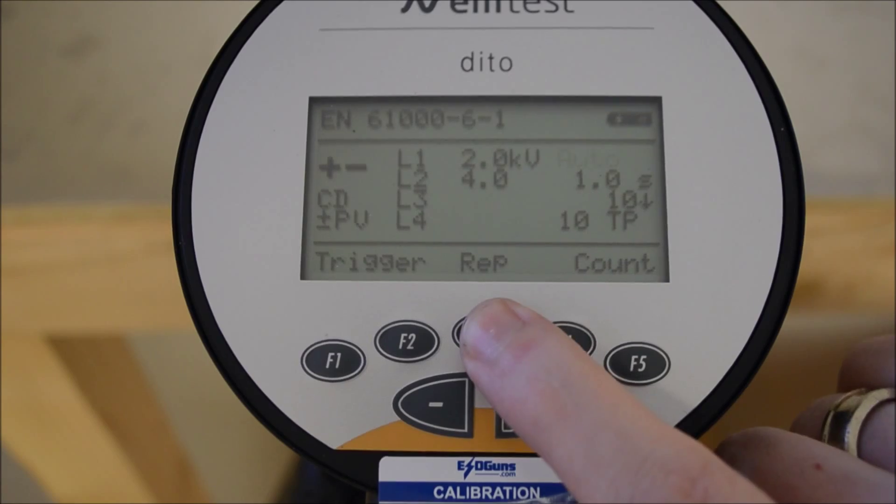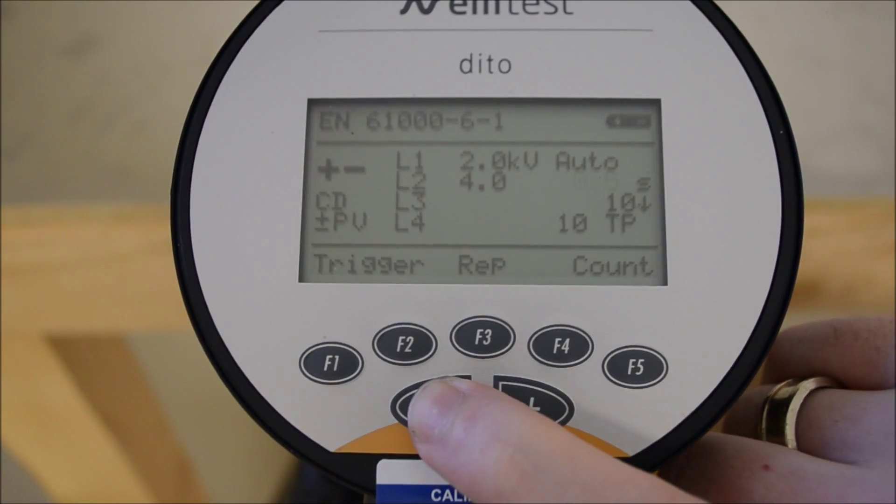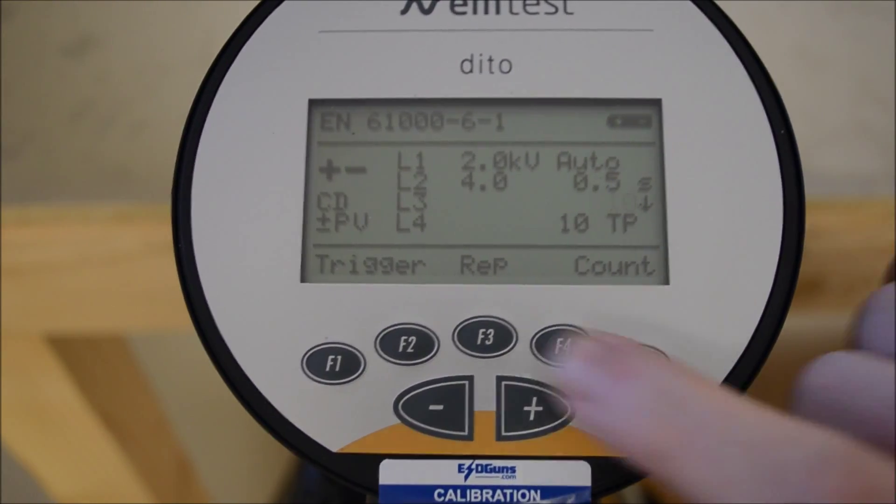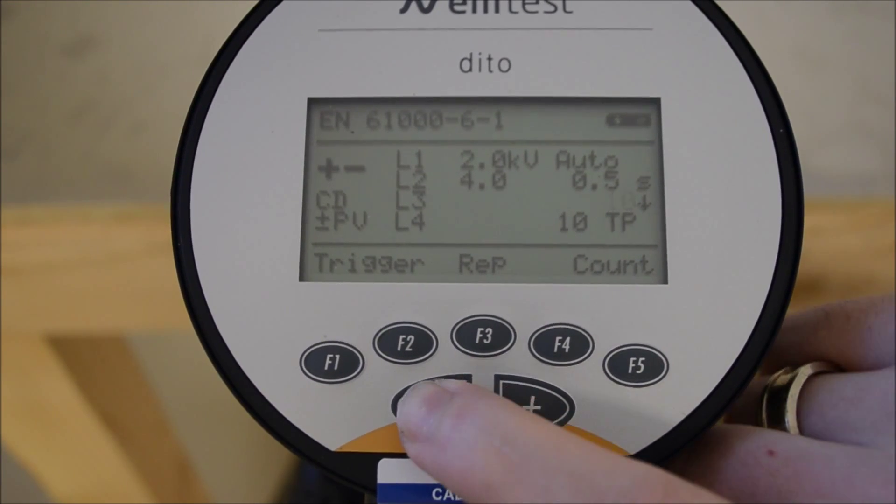For demonstration purposes and to make life easier on your operator we'll set the trigger mode to automatic and speed up the discharges. To keep it short we'll lower the pulse count down to 2 per level.